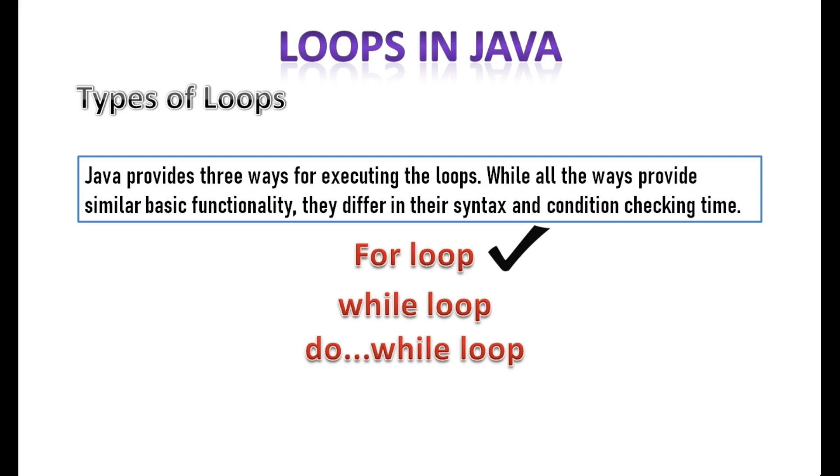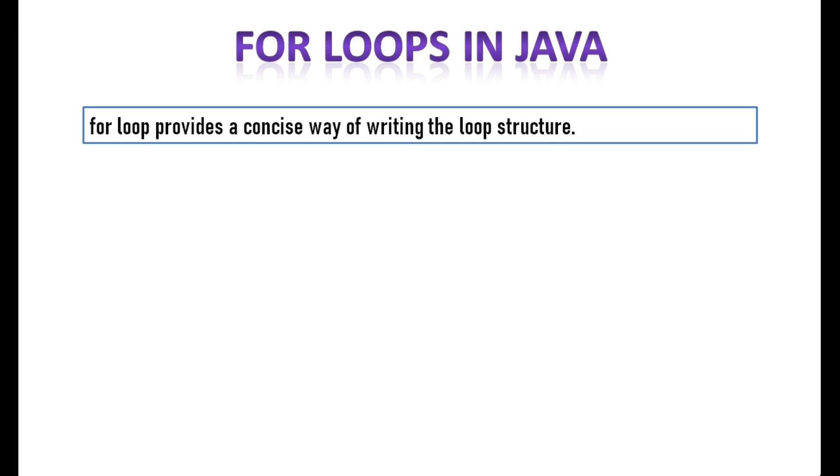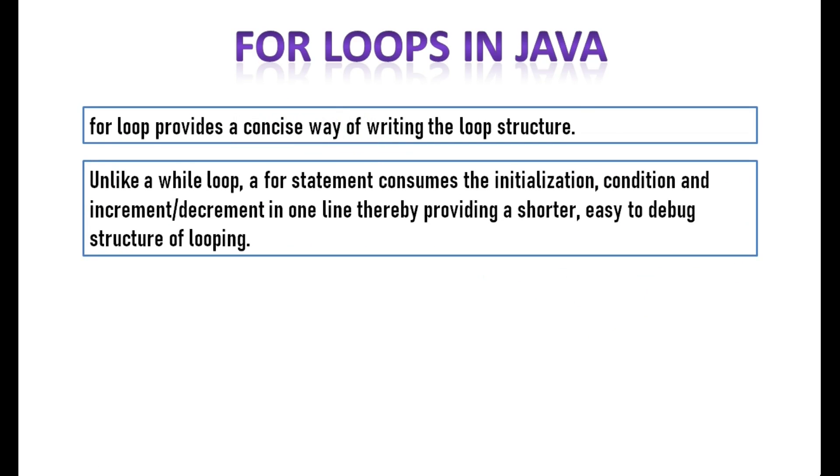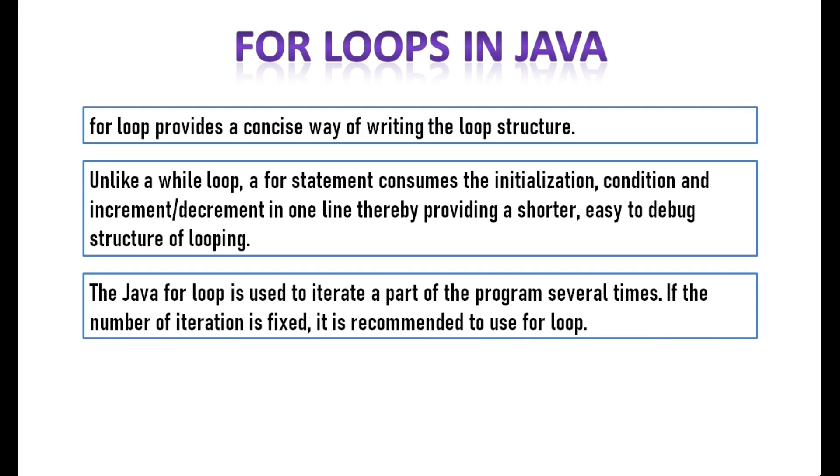For loop provides a concise way of writing the loop structure. Unlike a while loop, a for statement consumes the initialization, condition, and increment decrement in one line thereby providing a shorter, easy to debug structure of looping. The Java for loop is used to iterate a part of the program several times. If the number of iteration is fixed, it is recommended to use for loop.